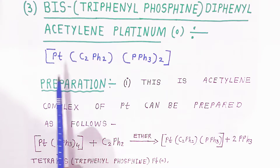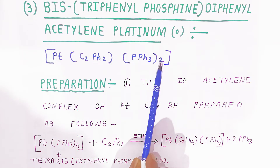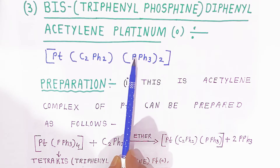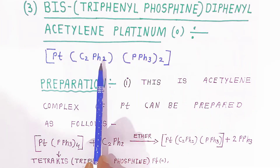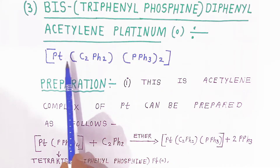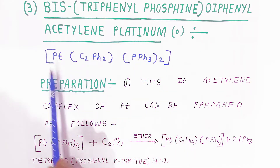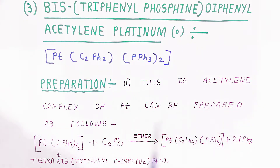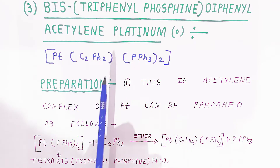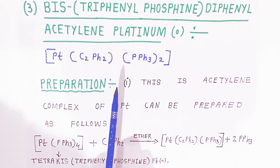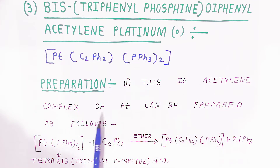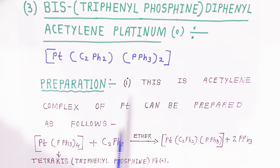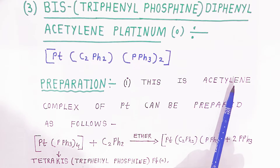Here is the structure shown. 'Bis' means two, 'triphenyl' refers to three phenyl groups, and 'P' stands for phosphine. This is the diphenyl acetylene platinum complex, representing the complex of bis triphenyl phosphine diphenyl acetylene platinum in zero oxidation state. This is an acetylene complex of platinum we are learning in organometallic chemistry.